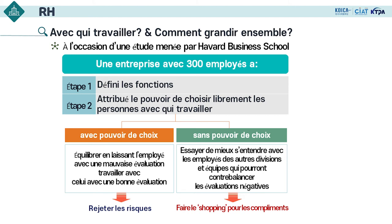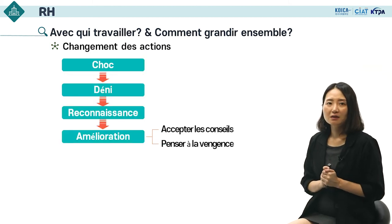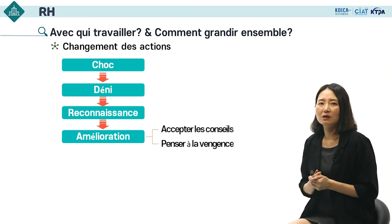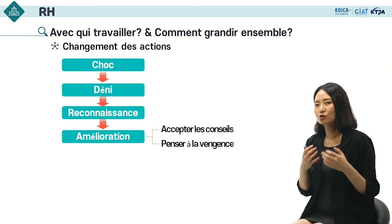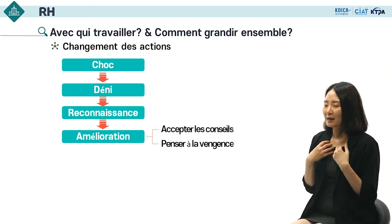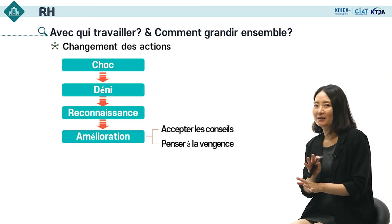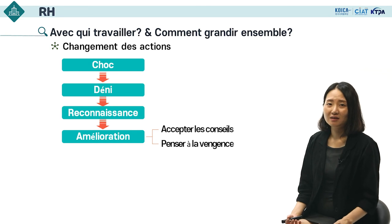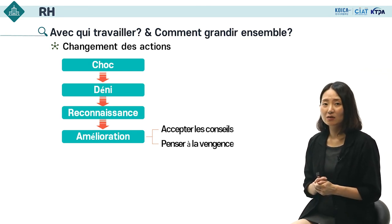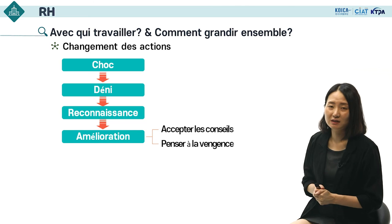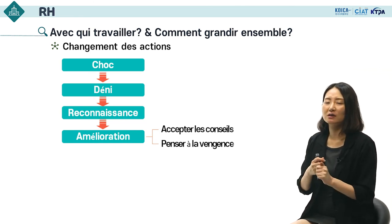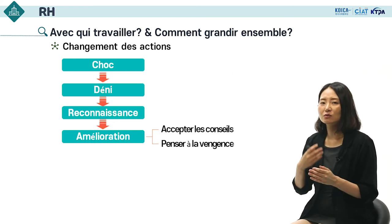On l'explique avec le terme psychologique le « shopping » pour le compliment. Face à cette situation, le comportement des employés qui restent se change en quatre étapes : d'abord ils sont choqués, ensuite ils rationalisent en supposant que le collègue a de bonnes raisons, puis ils acceptent en se retournant sur eux-mêmes, et enfin c'est l'étape de l'amélioration — certains acceptent les conseils, mais d'autres pensent à la vengeance quand les conseils se concentrent sur leurs défauts plutôt que sur leurs points forts.